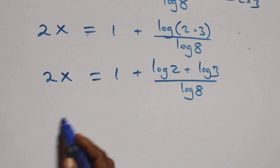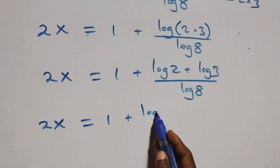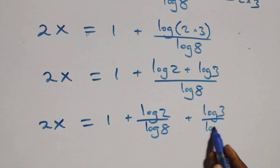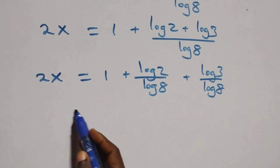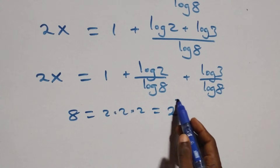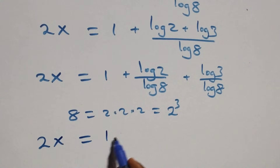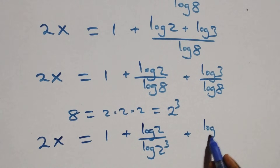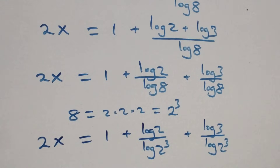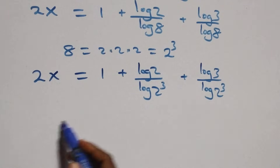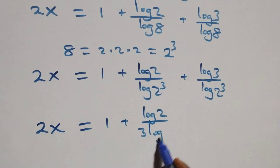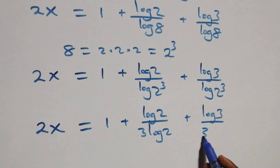Now we rewrite 8 as 2 times 2 times 2, which is 2 raised to power 3. So the denominator log 8 becomes log of 2 raised to power 3, which equals 3 log 2 by the power rule. Then we have 2x equals 1 plus log 2 over 3 log 2, plus log 3 over 3 log 2.